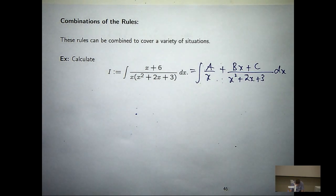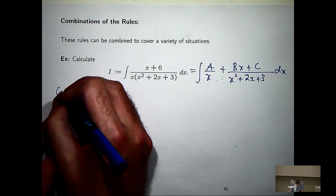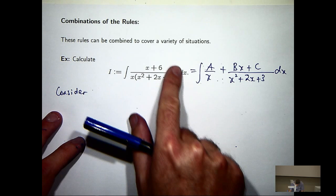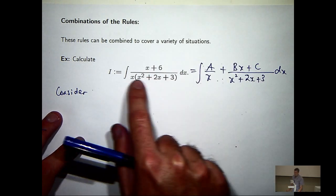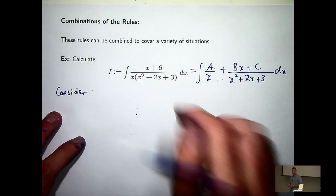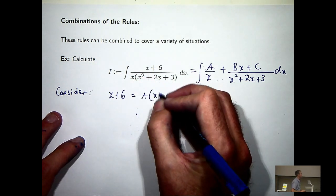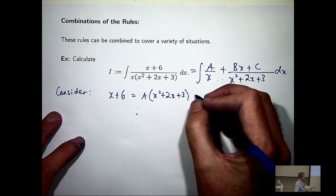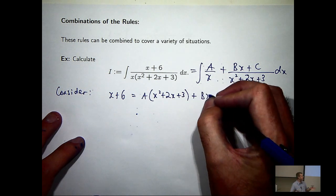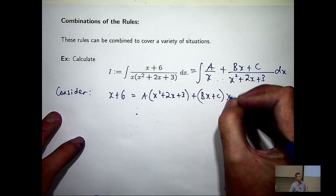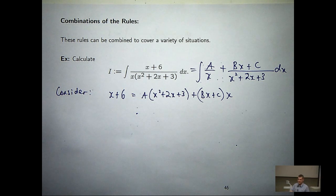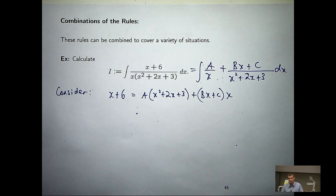I'm not going to use Heaviside or anything like that. I'm just going to use the general method, where you look at the integrals and multiply both sides by everything on the bottom. You can either equate the coefficients or substitute in — whichever method you're more comfortable with.